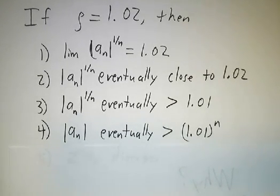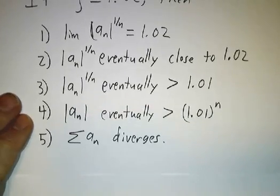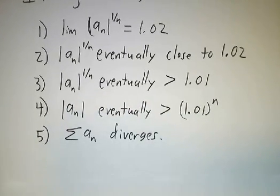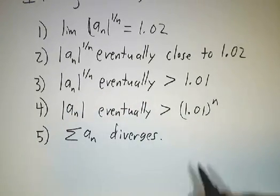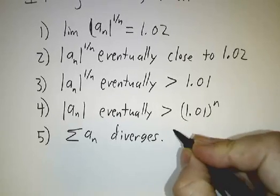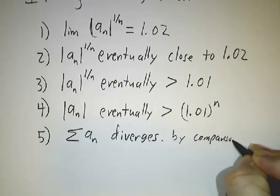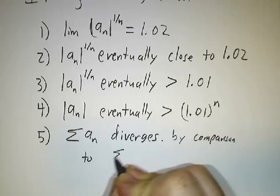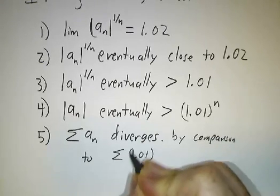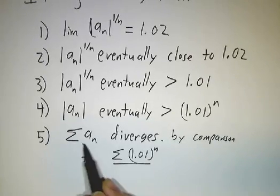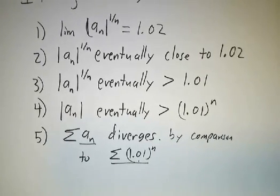So that means it diverges again by comparison to the sum of 1.01 to the n. This diverges, this is eventually bigger, so this diverges. End of story. That is the root test.